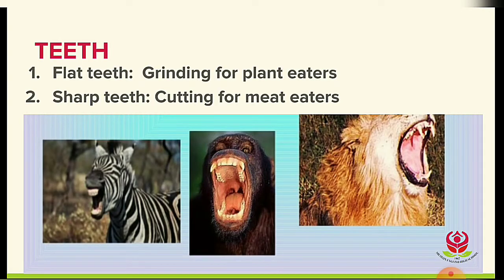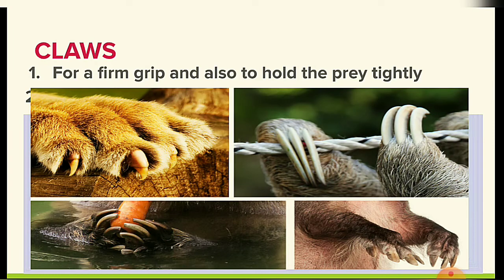Regarding teeth: plant-eating animals, or herbivores, have flat teeth, while meat-eating animals, carnivores or omnivores, have sharp teeth. For example, giraffes and zebras have flat teeth, while lions, tigers, and cheetahs have sharp teeth. Animals also have claws for a firm grip and to hold prey tightly.